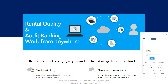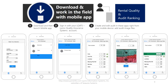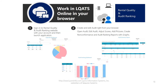Rental quality and audit ranking — work from anywhere. Effective records keeping: sync your audit data and image files to the cloud. Download and then launch the mobile app. Sign in with your LGATS Lions Quality Assurance System account. Work in rental quality and audit ranking online in your browser by signing in to the website with your account and launching the application.